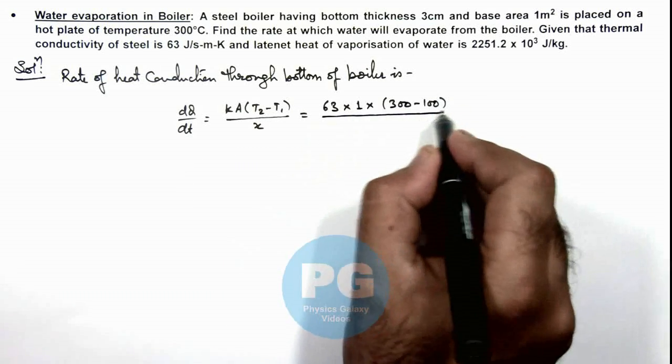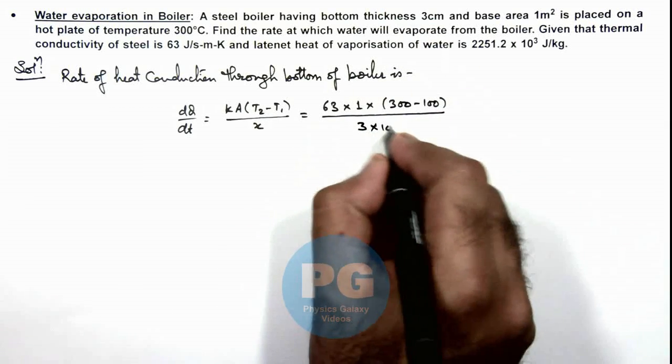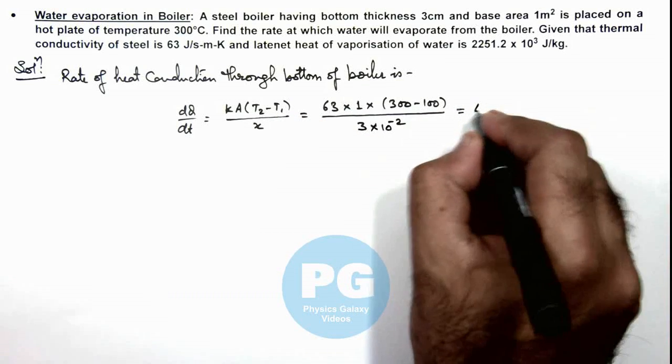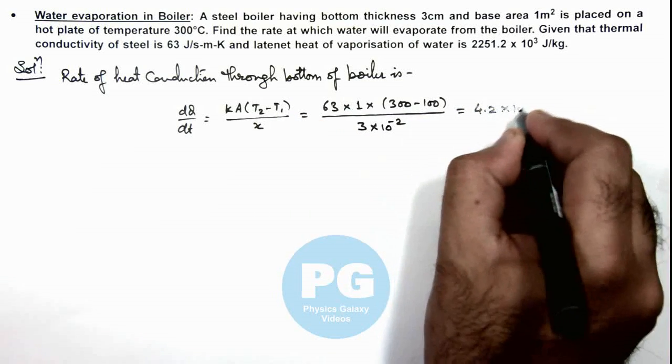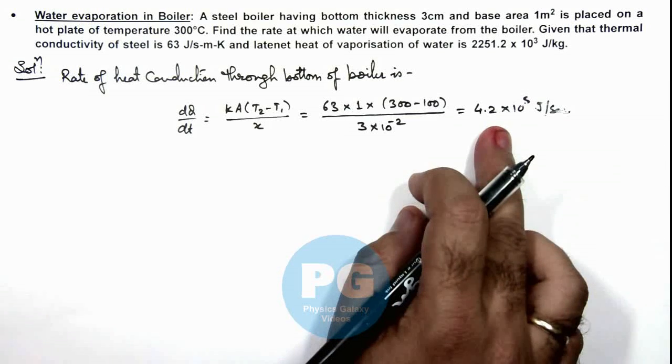Divided by x is 3 centimeter so this is 3 into 10 to power minus 2. Simplifying this gives us 4.2 into 10 to power 5 joule per second. That is the rate at which heat is being conducted.